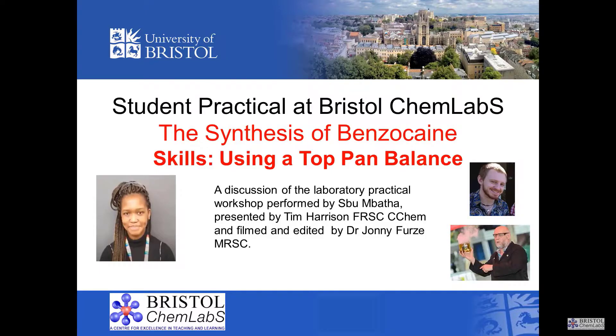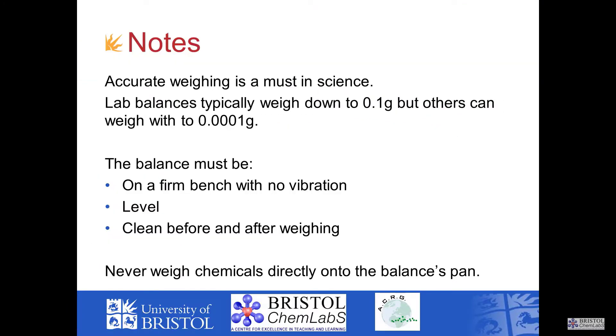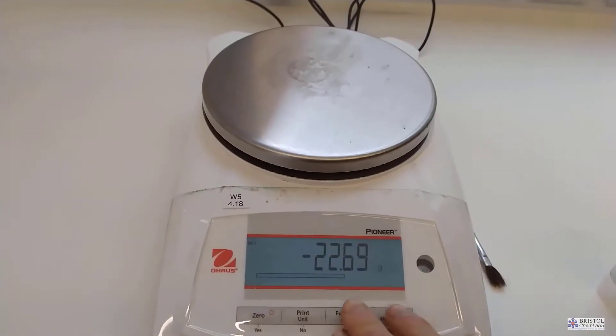A balance is a must-have in any science laboratory. A standard chemistry laboratory balance would weigh to 0.01 grams but balances far more accurate than this exist. The balance you see here is a top pan balance measuring to 0.01 grams. The balances must be set up on a surface that is flat. Some balances have a spirit level built in to ensure that the balance is level.